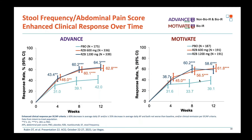Looking at speed of response: in ADVANCE (bio-naive and bio-inadequate) and MOTIVATE (bio-inadequate), a statistically significant separation from placebo begins at week 4. These data show response — not remission — so the higher levels of around 60% are expected. Notably, in MOTIVATE, a tough patient population, most of the response has been captured by week 8, even though week 12 is the primary endpoint.